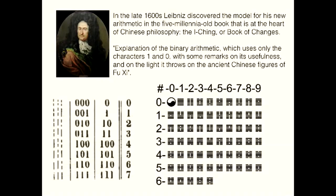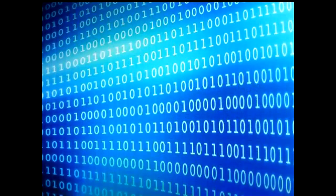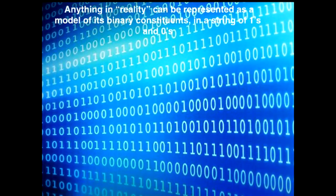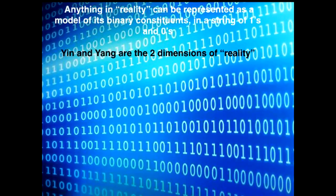If you can see, these are his notes on the left side and you can see the hexagrams. The top hexagram is written in a vertical form instead of the usual horizontal form. He's showing how each one of these hexagrams can be used to signify a number. He realized that anything in reality can be represented as a model of its binary constituents — in other words, as ones and zeros. And of course this is the basis of our computer systems. We would not have computers or the images we see on our electronic screens were it not for Leibniz having read the I Ching and created this binary system that is now the basis of all computerization.